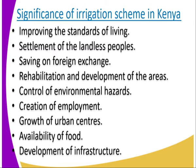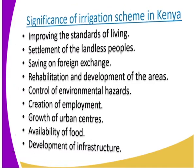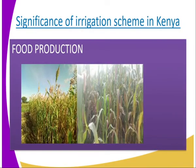Then we have the availability of food. People found in those places can get food — maize, beans, tomatoes, marrows, pawpaws — they are being produced in the scheme. Then we have the development of infrastructure. Roads have been developed in these areas since the government wants the commodities to get to market.